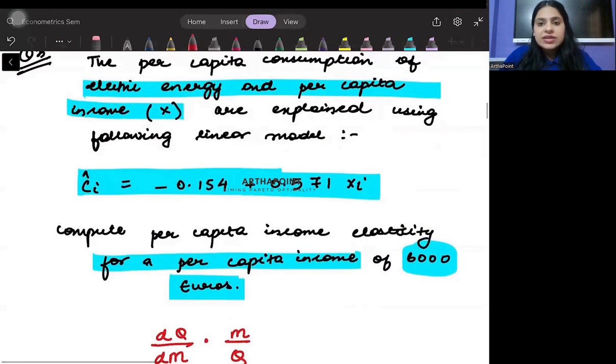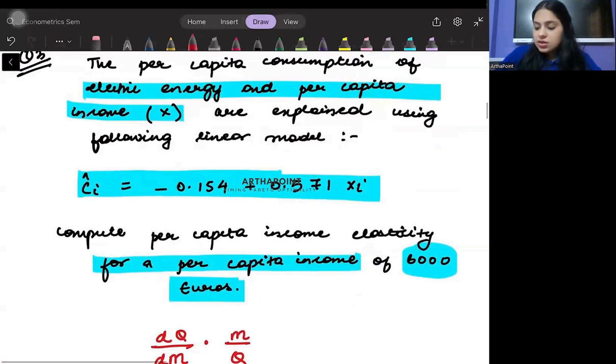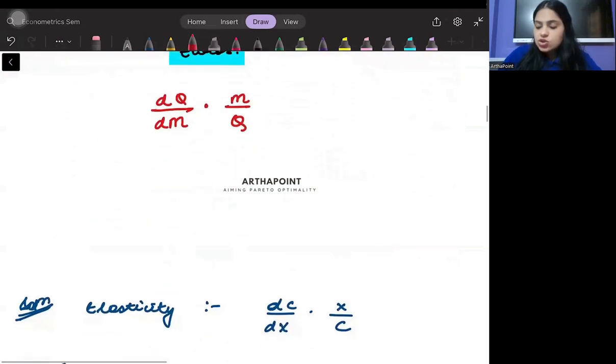If you just look here, it says the quantity is of consumption of electric energy and then you need to find its relation with income which is represented by x. You need to go ahead and ask how consumption changes as income changes into income by initial consumption.